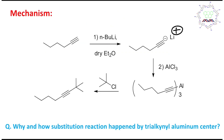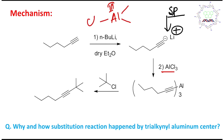From one butyl lithium reagent we get another butyl lithium reagent — this is an sp carbanion. This sp carbanion is expected to react with AlCl₃. The aluminium is in a +3 oxidation state attached to 3 chlorines, making it a six-electron species. It needs two more electrons to achieve an octet, so it acts as a Lewis acid. The sp carbanion acts as a Lewis base and attacks, forming an acid–base adduct where aluminium achieves eight electrons in its valence shell.